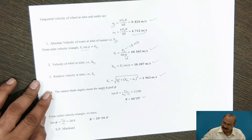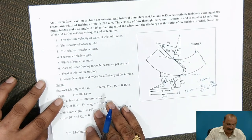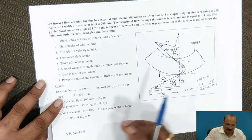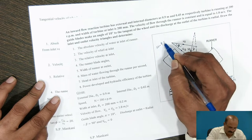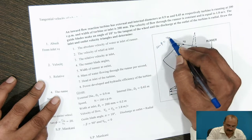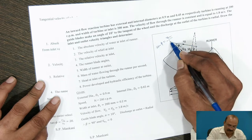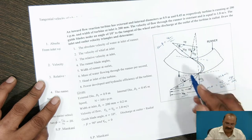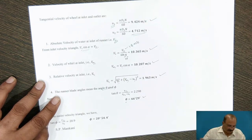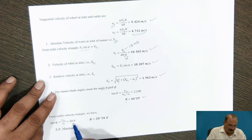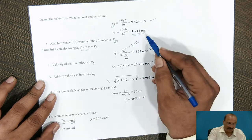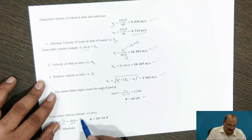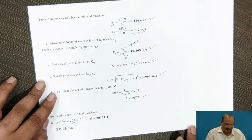For the outlet angle phi from the outlet velocity triangle: tan(phi) = Vf2 / U2. Since Vf2 = Vf1 = 1.8 m/s and U2 = 4.712 m/s, substituting these values gives tan(phi) = 0.382, so phi = 20 degrees 54 minutes 4 seconds.